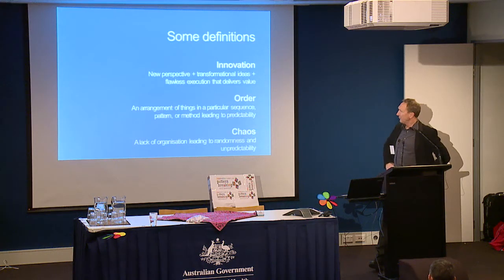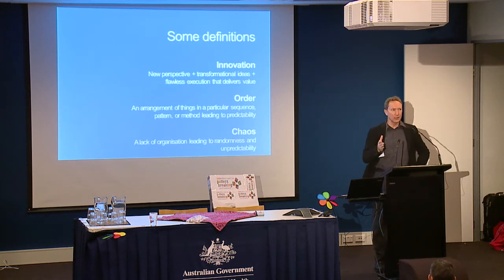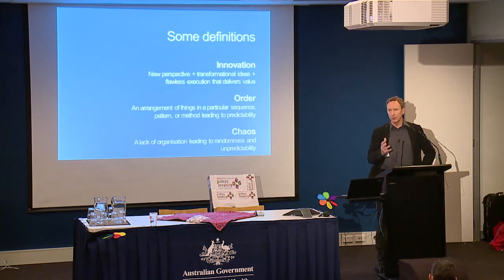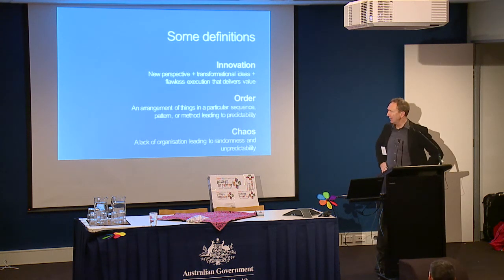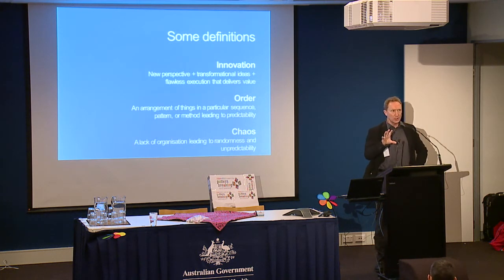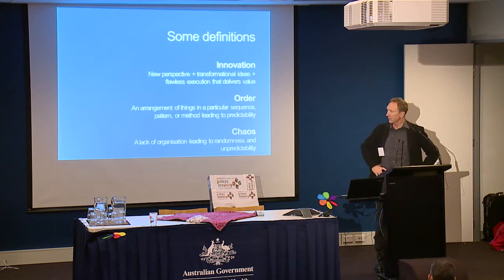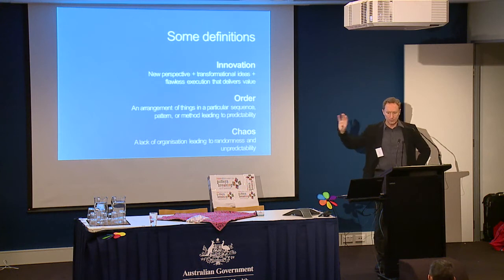The Greek word for order is cosmos. So cosmos and chaos were the two terms in Greek. Order is an arrangement of things in a particular sequence, pattern or method leading to predictability. Order equally is not very helpful for innovation. Things are so stable, we're so bogged down by procedure, process, complete rigidity, that innovation can't occur in that space either. But if you get between order and chaos, you get to this space of innovation.